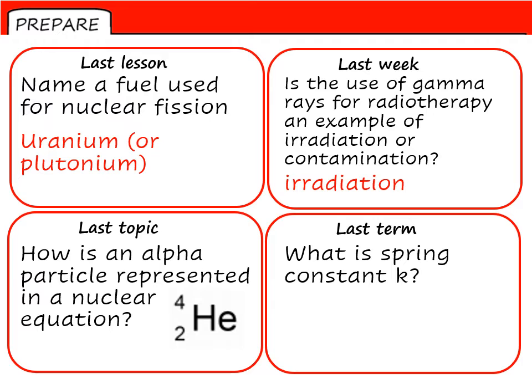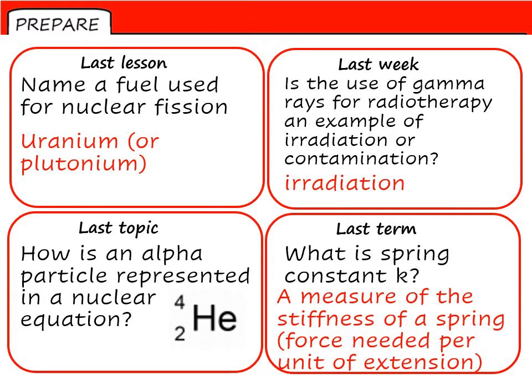And the spring constant K represents a measure of the stiffness of a spring. It is, by the equation, the force needed for unit of extension. So K equals F divided by E, if you were expressing that using the Hooke's law equation.